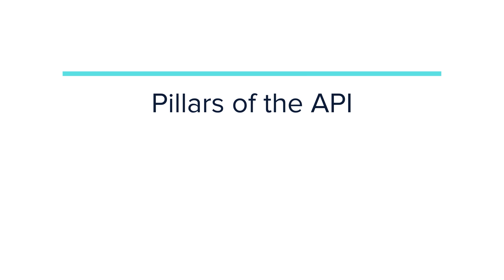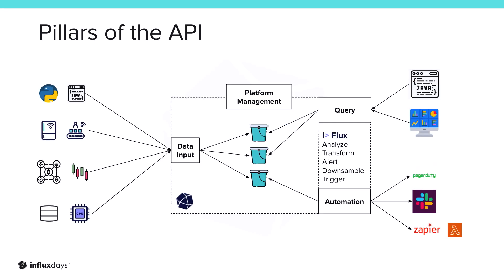Let's get into the key pillars of our API. There are four key aspects. One is data ingest — getting data from your devices and applications into your database. The second is querying, allowing you to query data you've pulled into the database and visualize it or add value to your application. Third is automation, where you can run complex logic at regular intervals and trigger other workflows under certain conditions. And lastly, we have platform management endpoints for managing database resources and access control.